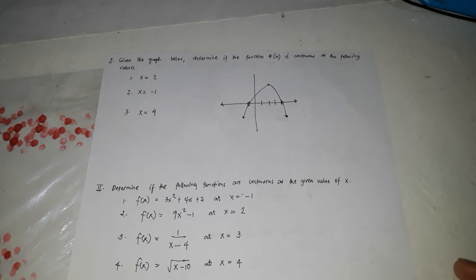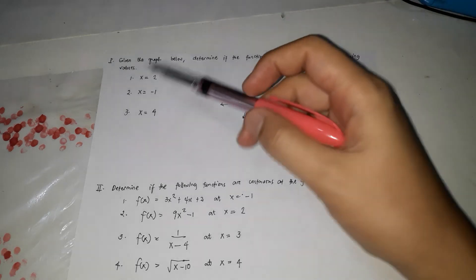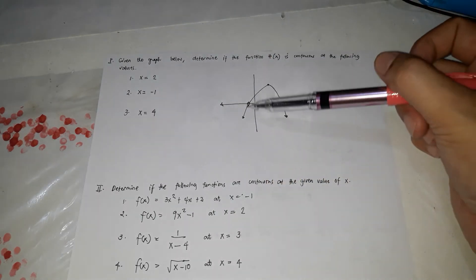It is continuous if you're going to trace the graph at that particular interval. You will not going to lift the ball pen. Example, for number 1, x is equals to 2, and this is the graph.